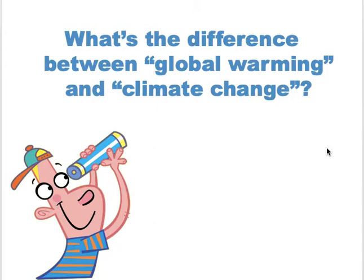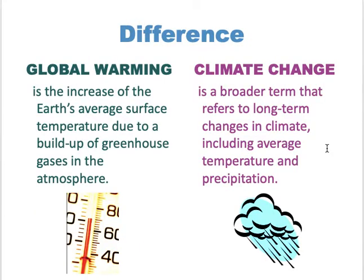In some arguments you may hear, global warming and climate change are somewhat related to each other. But what is the difference? Global warming is the increase in average surface temperature due to the build-up of greenhouse gases. However, climate change is a broader term that refers to long-term changes in the climate, including average temperature and precipitation. The increase in temperature — which is global warming — is part of climate change.